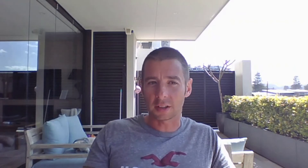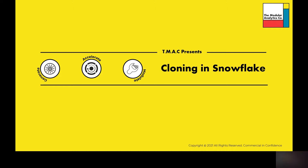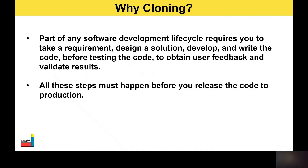Changes made to the source object or the cloned object are not reflected in each other. So let's start by talking about what problem cloning solves. As part of any software development life cycle, it requires you to take a requirement, design a solution, develop and write the code, test it, obtain and use feedback, and then validate the results. All of these steps must happen before you release the code to production, and needless to say, this takes a lot of time.